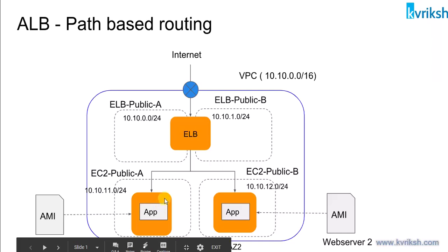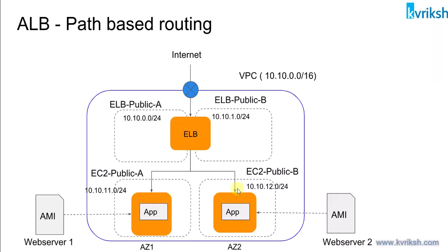Ideally these web servers need not be public-facing because the ELB is there to get traffic from the internet, so these instances should be in a private subnet. But for ease of this exercise, I'll be launching these EC2 machines in public subnets so that when they boot up we can execute user data at runtime and configure them as web servers.